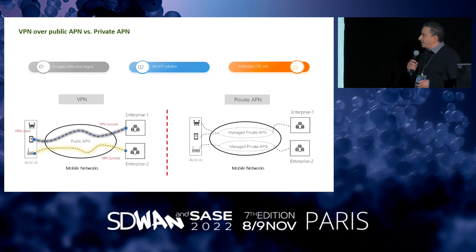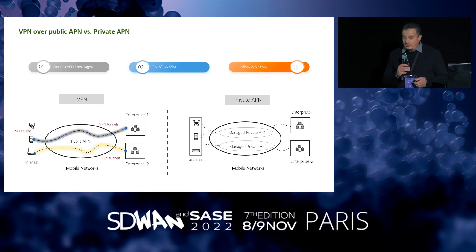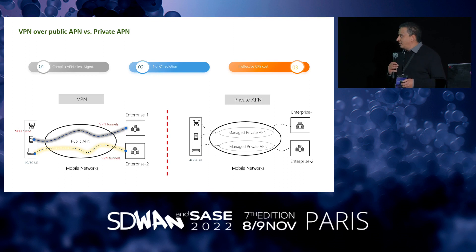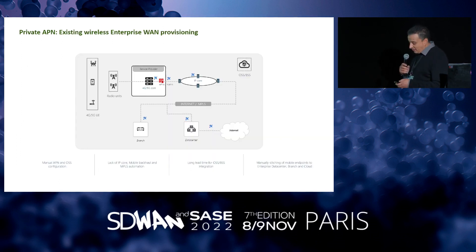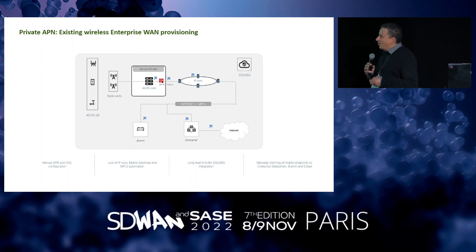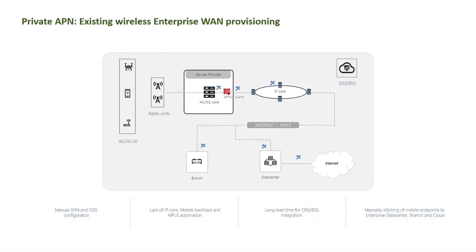There's a better solution called private APN, which has been around for years, where a mobile service provider creates a private wireless network for a specific enterprise and stitches that into the enterprise LAN. It's a good, ubiquitous solution — it doesn't require any agent or gateway and does connect you to the enterprise LAN — but you don't get the benefits of SD-WAN and SASE, because this is a separate cloud or island without the unified service plane and full visibility and control. Additionally, it has a lot of manual touchpoints: you need to configure a separate instance per enterprise in the 4G/5G packet core, a separate firewall instance, a separate IP core instance, and then stitch it into the existing enterprise LAN — losing that unified single pane of glass.